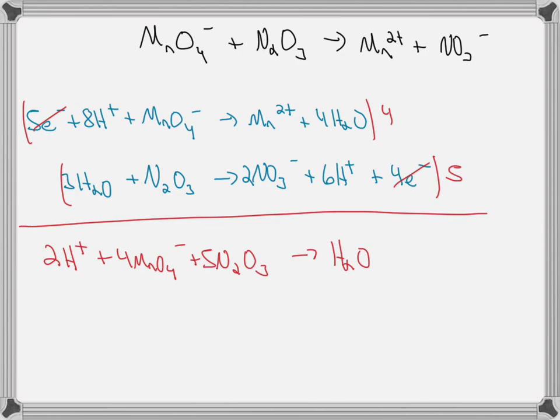On the right-hand side, we'll have four Mn2+. And then we've got two times five, so that's 10 NO3-, and we've already dealt with the hydrogen ions.